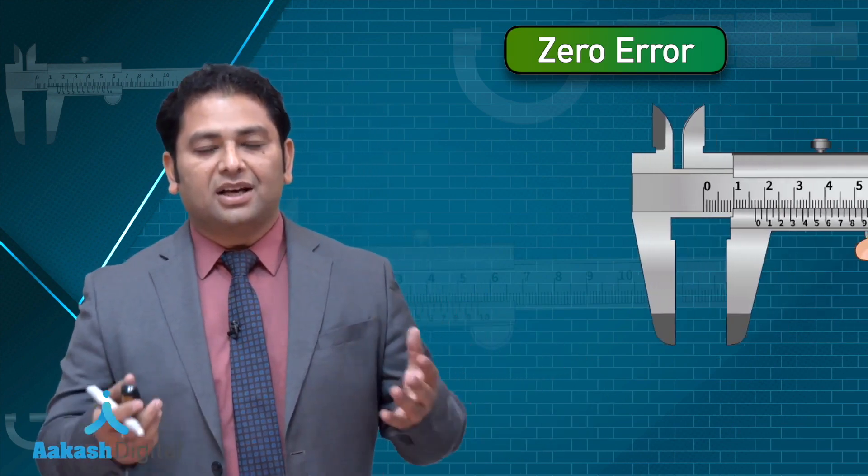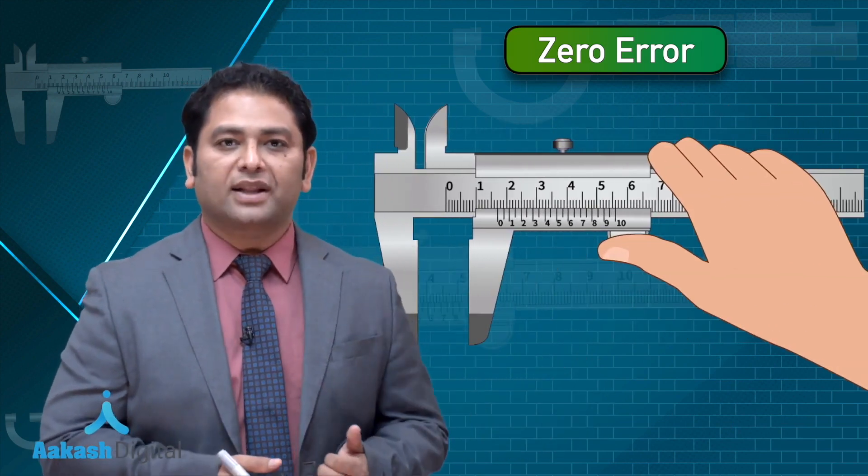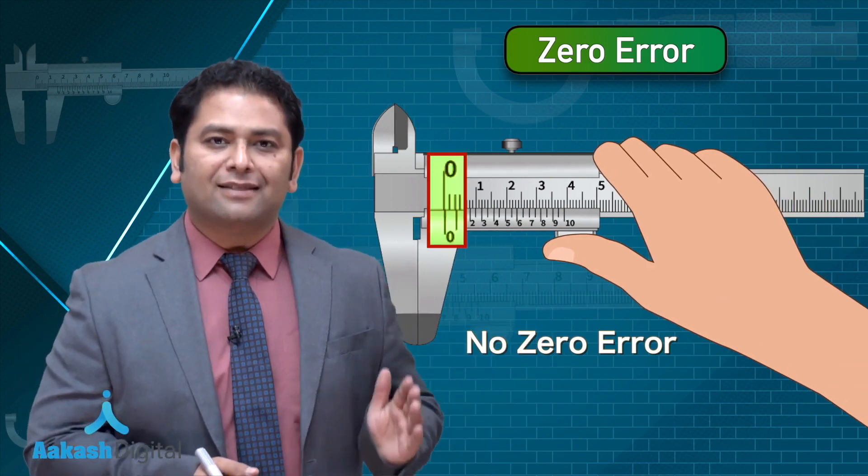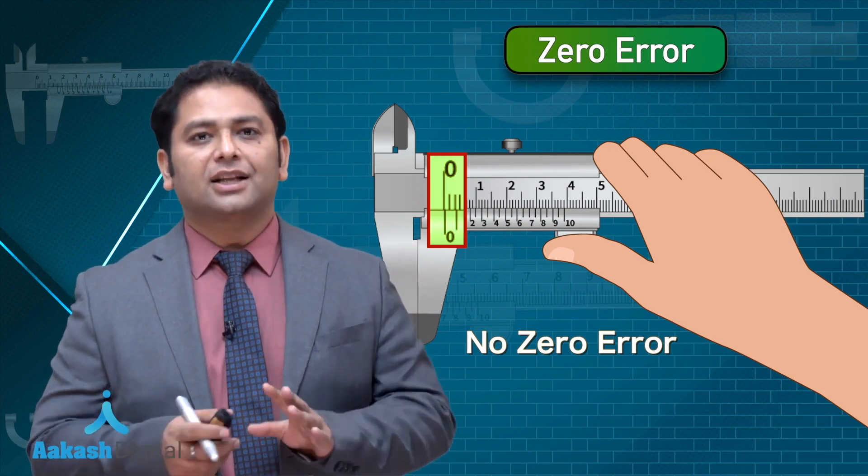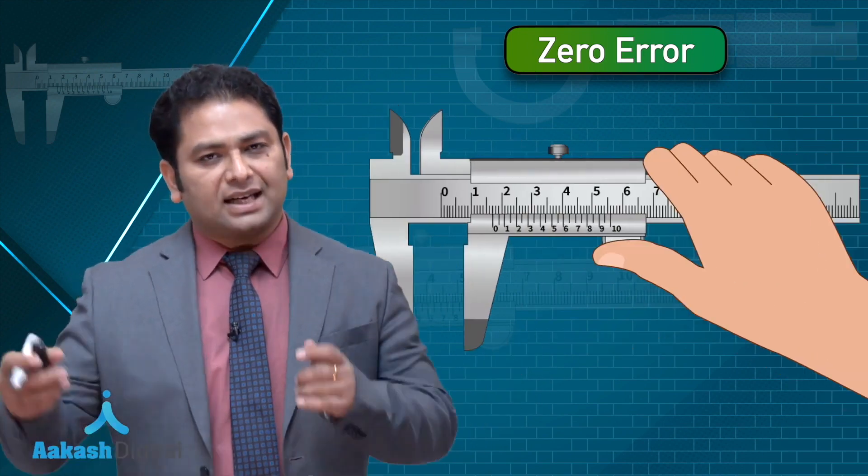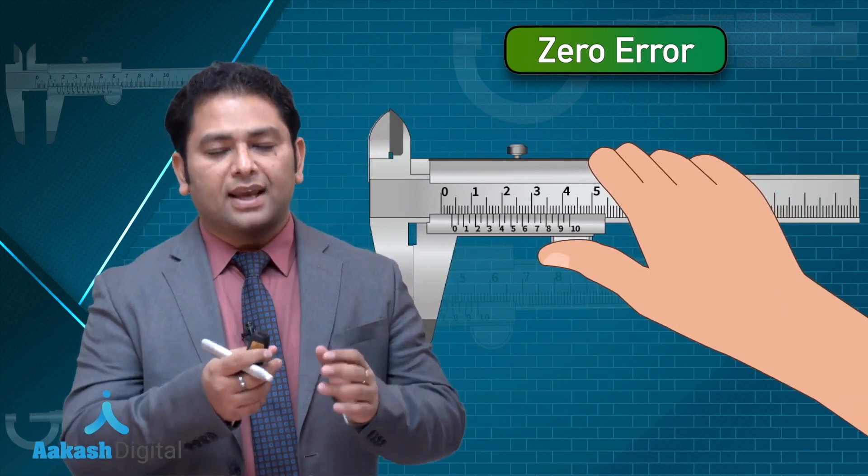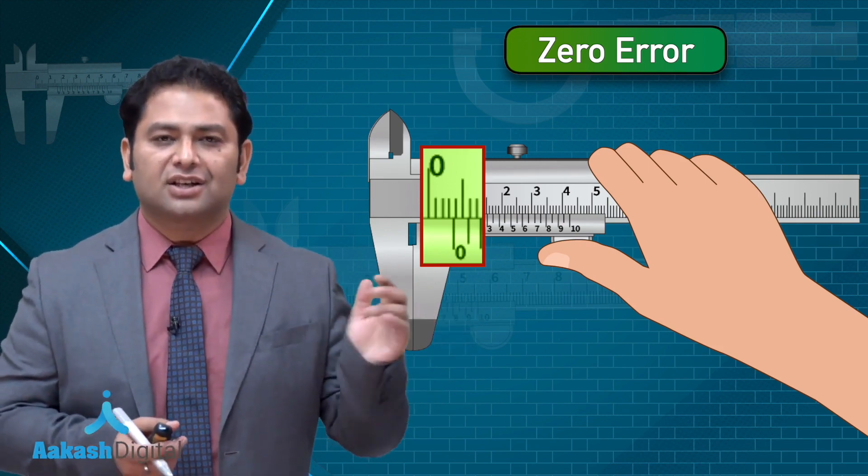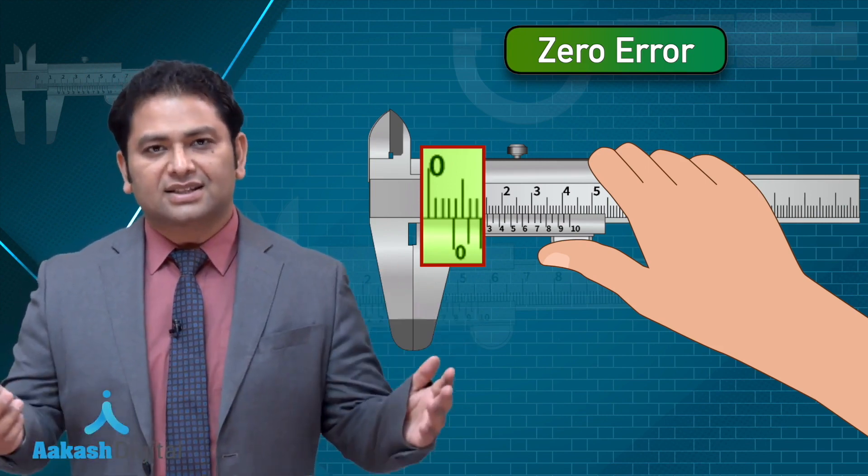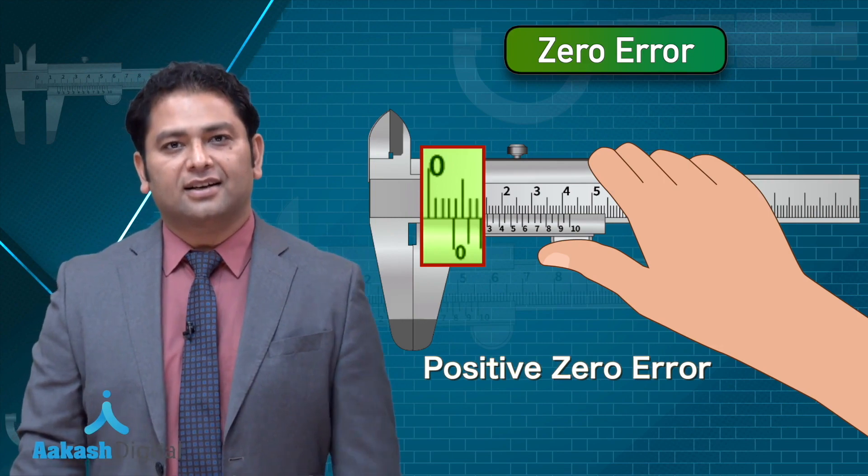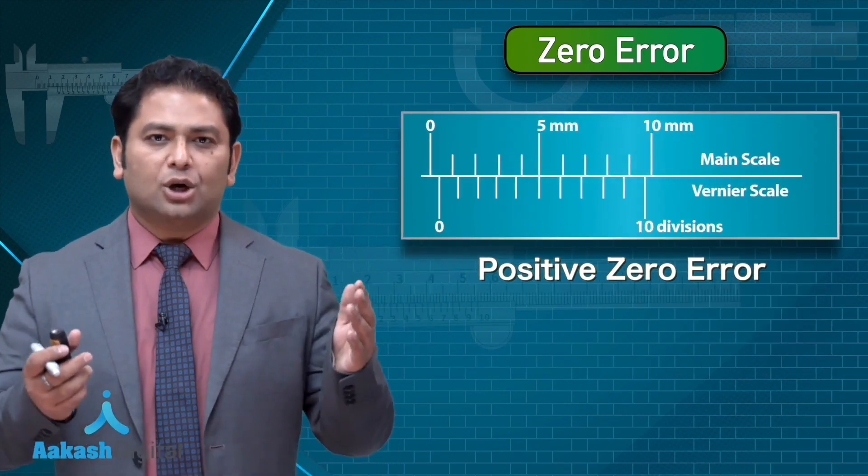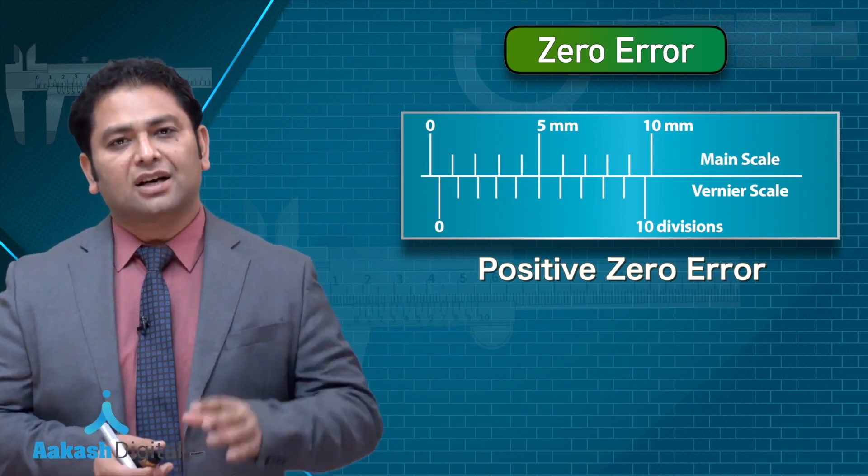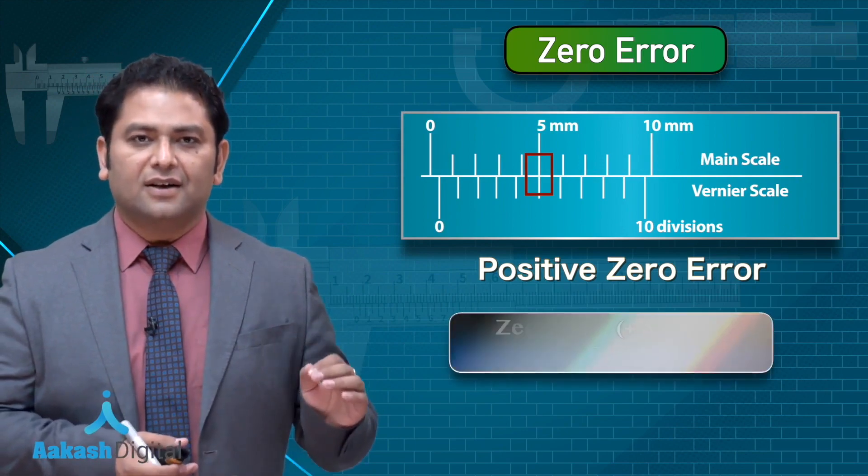Let me show what is the situation when there is no zero error. If the zero of main and that of Vernier coincide, there would be no zero error. But suppose someone pushes the Vernier scale and when the jaws are touching, the zero of Vernier could not reach the zero of main. This is the case of positive zero error. How much would be the error? Just see which Vernier division is coinciding with the main. Let us say the fifth division is coinciding, so the zero error is plus five into least count.